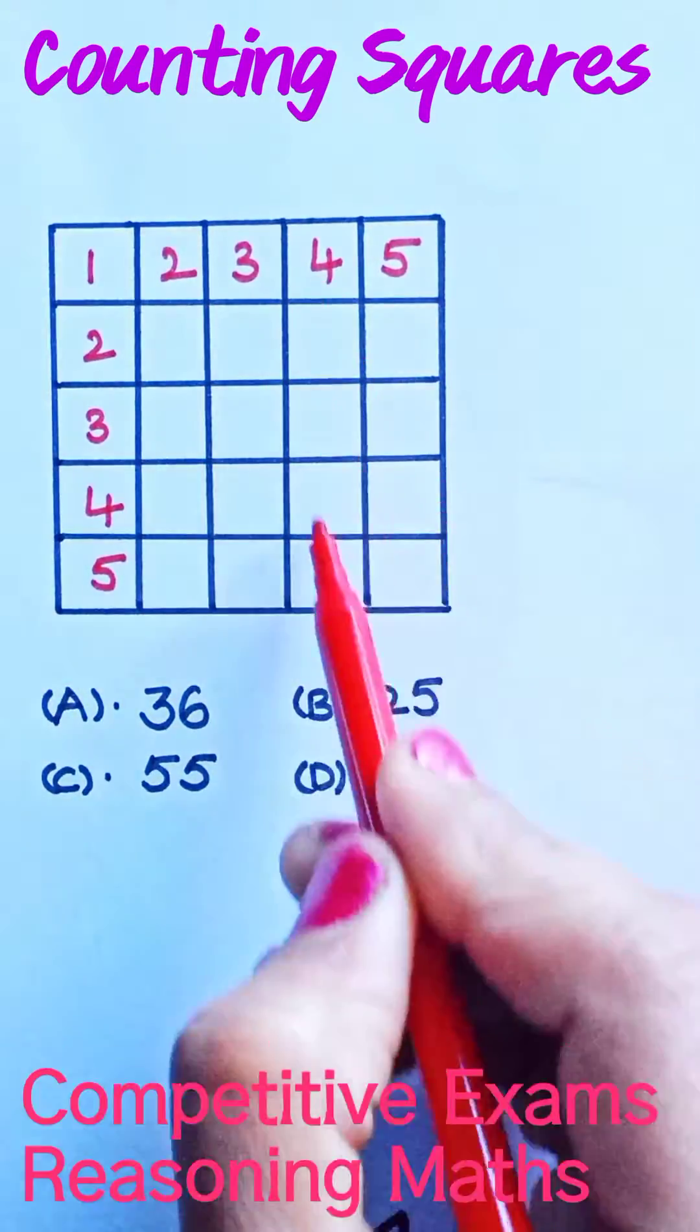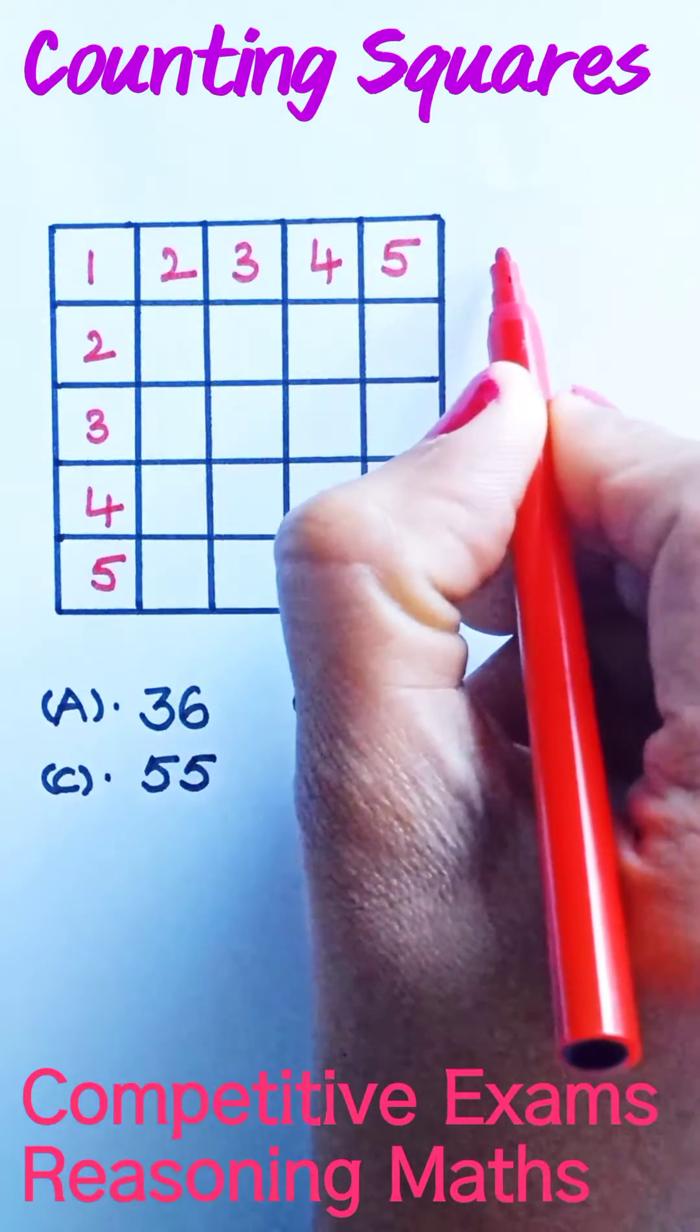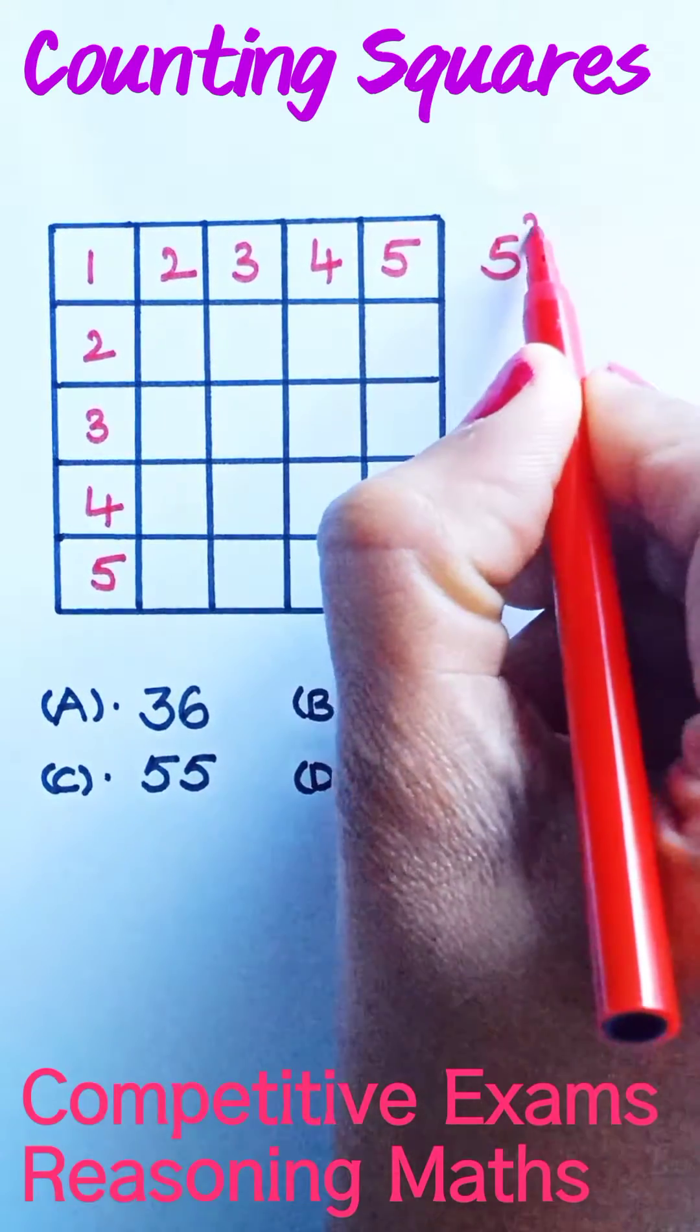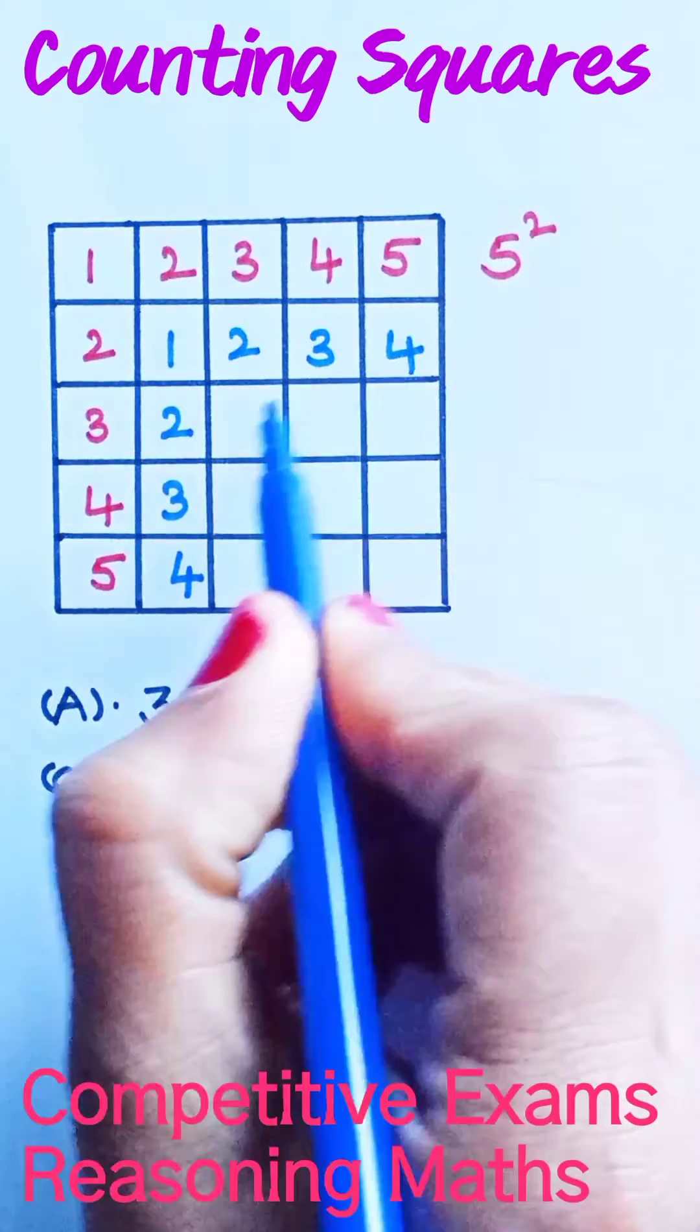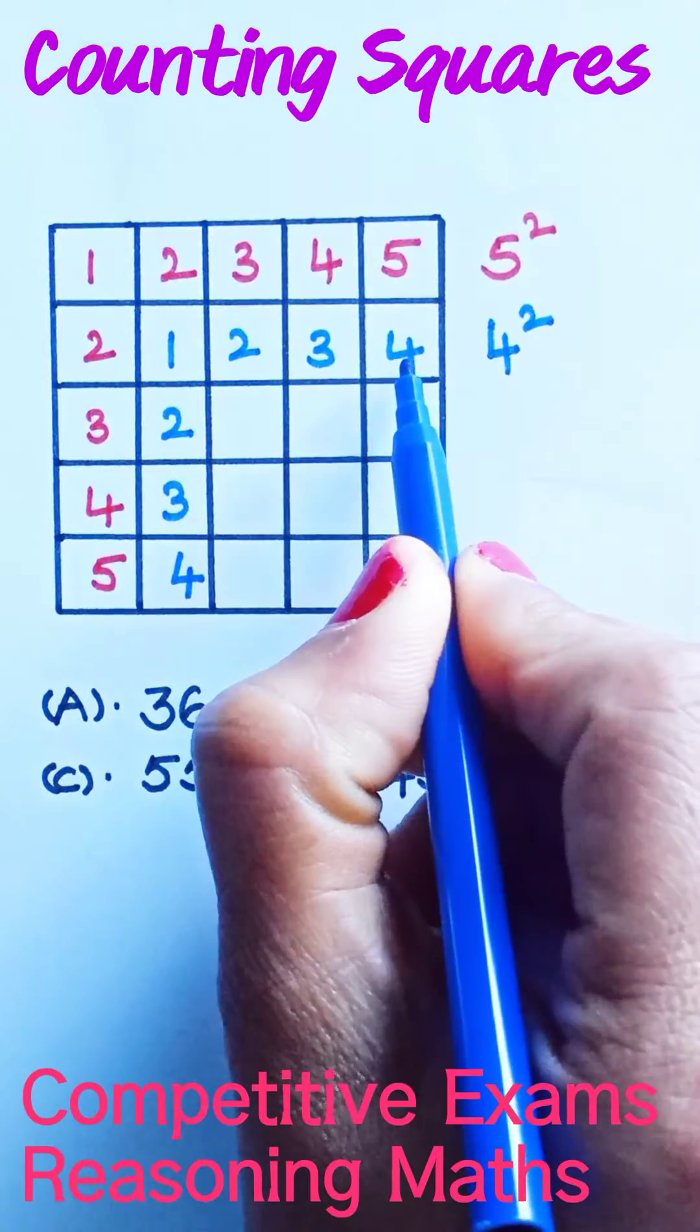There are five rows and five columns. Now take five squared. Let us number the remaining squares. Here there are four rows and four columns, so let us take the square of four.